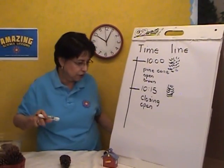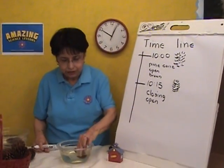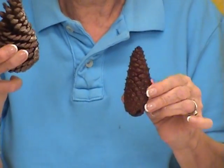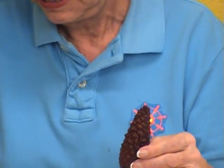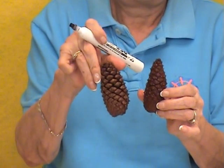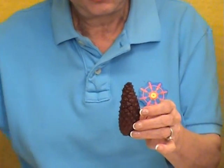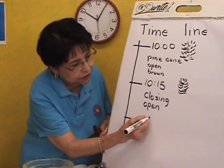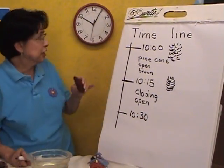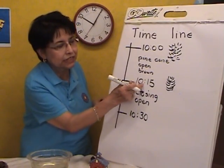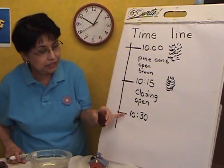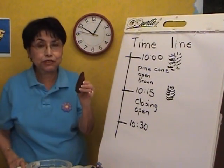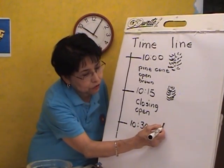Let me show you what 15 minutes later looks like. Here I have another one — look at it. Does it look like this one? No, this one is completely closed. You can see the big difference. So now I'm going to go to my chart and put 10:30. We're going to keep looking at our clock: in 15 minutes they'll see it's on the 15, and at 10:30 they'll see that 15 minutes later it's down on the six — 30 minutes. So now my pine cone looks like this.